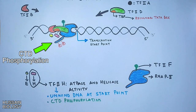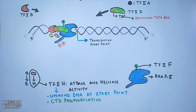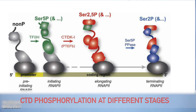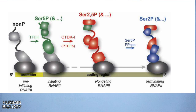The CTD of RNA polymerase 2 undergoes dynamic phosphorylation throughout the transcription process. As shown in the diagram, at the initiation stage only serine 5 is phosphorylated, which recruits the capping enzyme. During elongation, both serine 5 and serine 2 are phosphorylated. At termination, only serine 2 is phosphorylated.